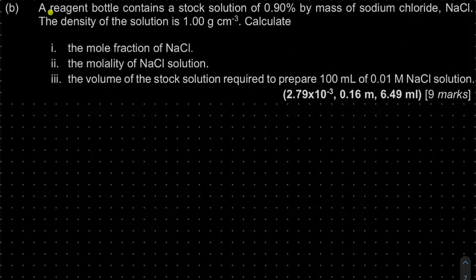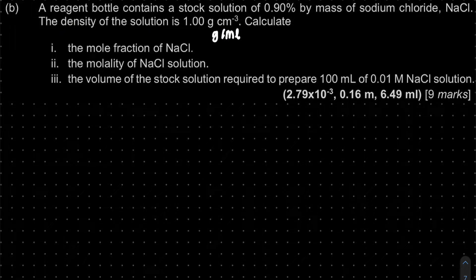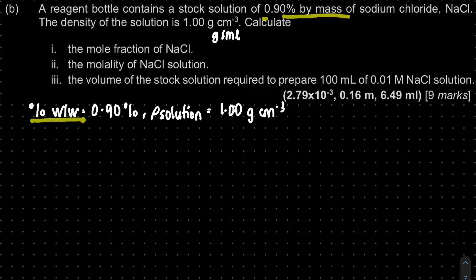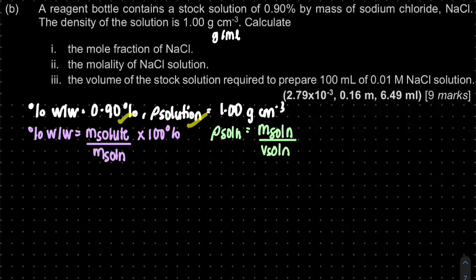Question 1B: a reagent bottle contains a stock solution of 0.9% by mass of sodium chloride, NaCl. The density of the solution is 1 gram per cm³, which is the same as 1 gram per milliliter. The first sub-question asks us to calculate the mole fraction. First, let's extract the information: percentage by mass = 0.9%, and density is given.